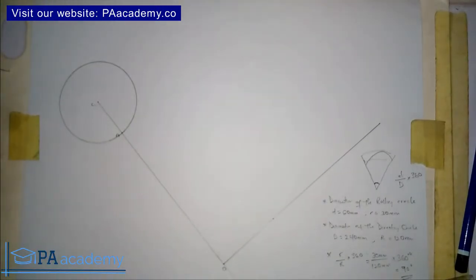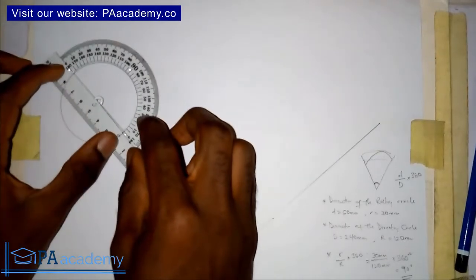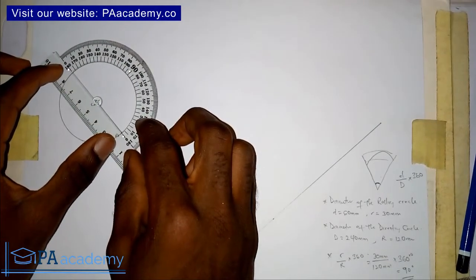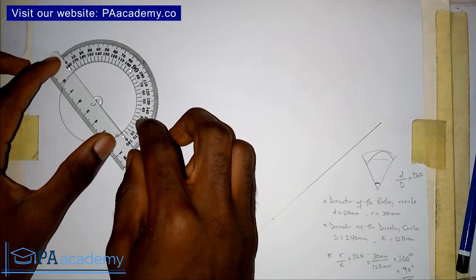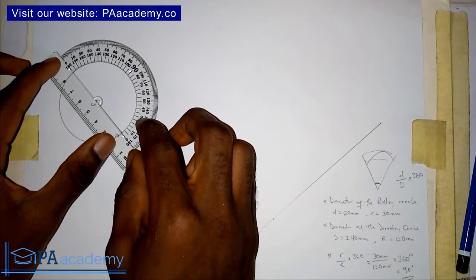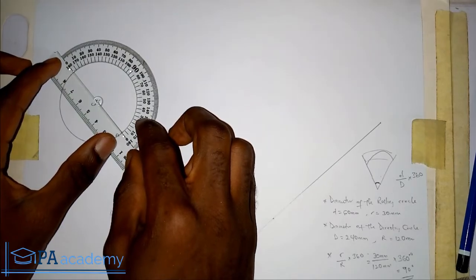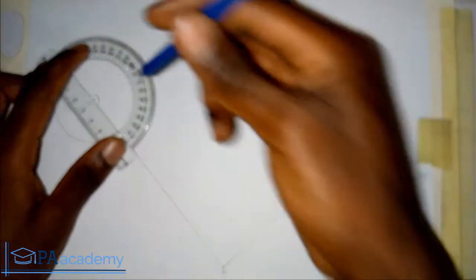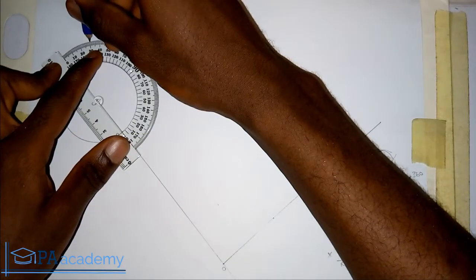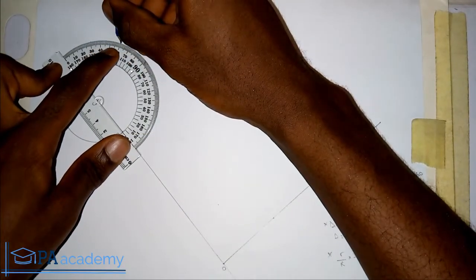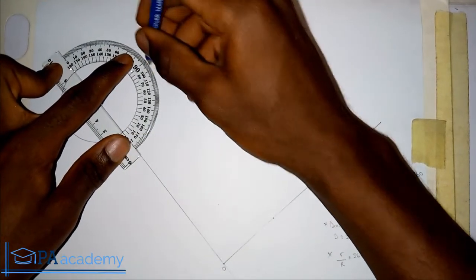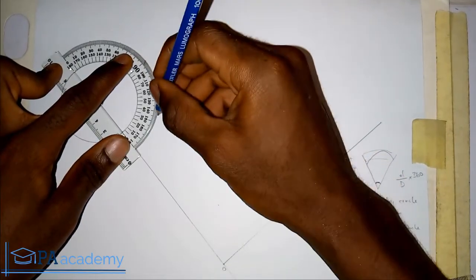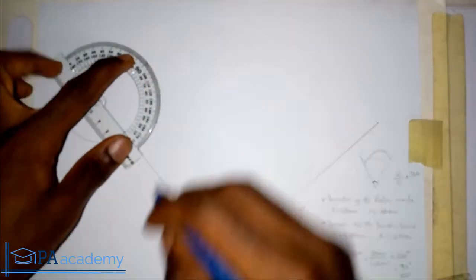This circle that I've just drawn I'm going to divide into 12 equal parts. In dividing it into 12 equal parts, that would be at 30-degree intervals — so 30, 60, 90, 120, and then 150, and so on all the way around.